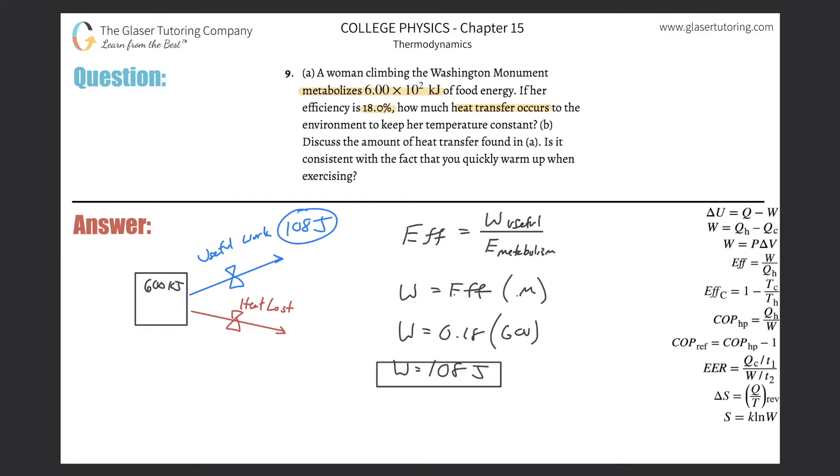Then it asks us how much heat transfer occurs. Well, if 600 is being outputted into two places and we know that one place has 108, what's the other? Simple—it's going to be just the subtraction.